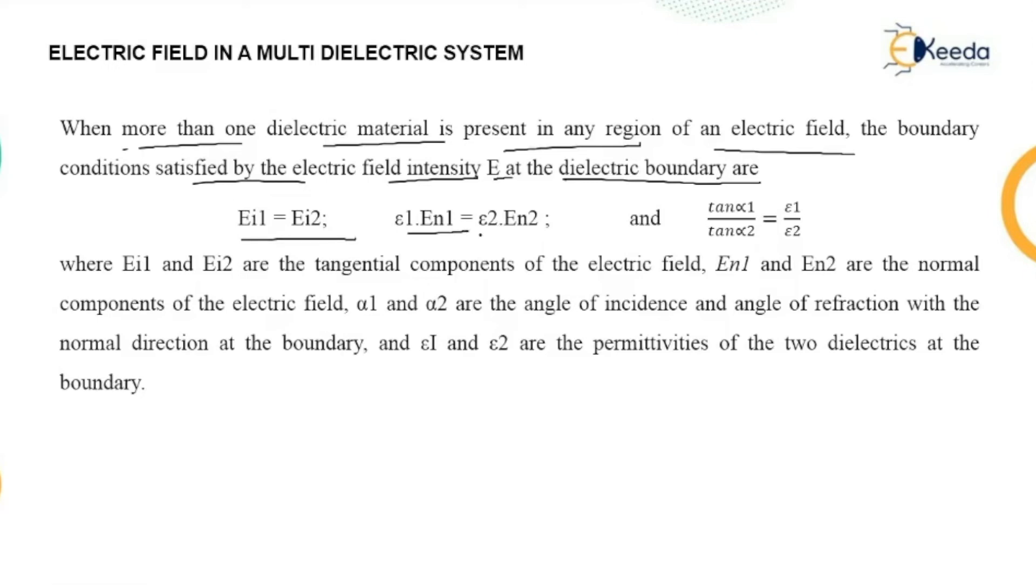Eᵢ₁ = Eᵢ₂, ε₁Eₙ₁ = ε₂Eₙ₂, and tan α₁/tan α₂ = ε₁/ε₂, where Eᵢ₁ and Eᵢ₂ are the tangential components of the electric field, Eₙ₁ and Eₙ₂ are the normal components of the electric field, α₁ and α₂ are the angle of incidence and angle of refraction with the normal direction at the boundary, and ε₁ and ε₂ are the permittivities of the two dielectrics at the boundary.